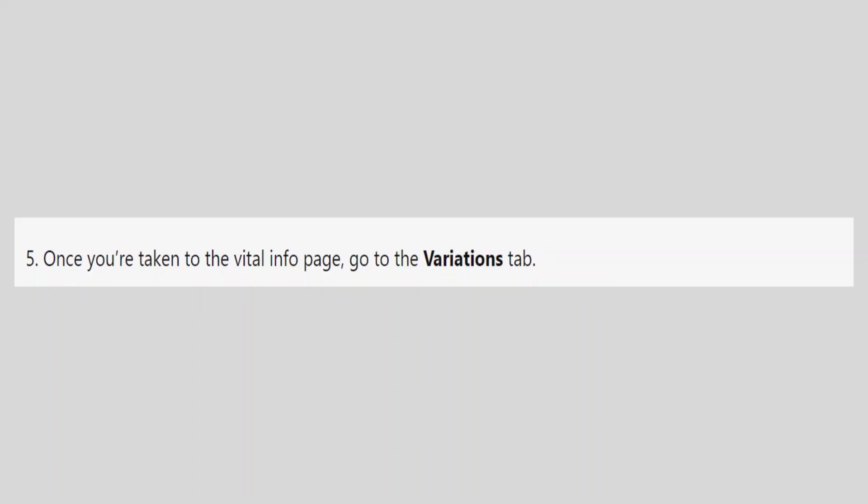Once you are taken to the Vital Info page, go to the Variations tab. That is how to create a variation from an existing listing on Amazon Seller Central.